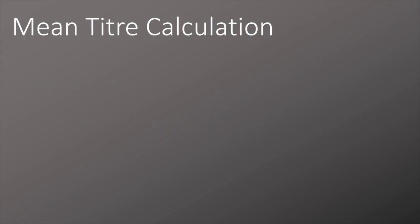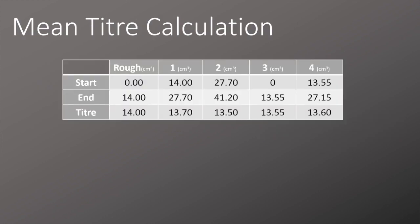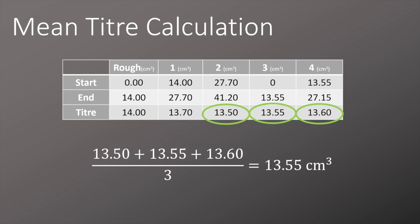So if we take an example set of results from a titration, you can see we started out with a rough run and improved as we ran on. We can identify the three concordant results as they're within 0.1 of each other and then we can use those to calculate the mean. In some exam questions we only get given two concordant results. It's important that we only use concordant results in calculating the mean titer values.